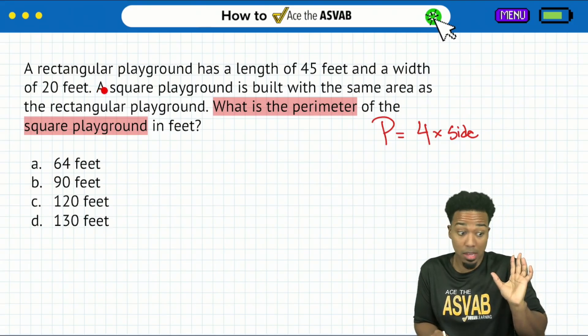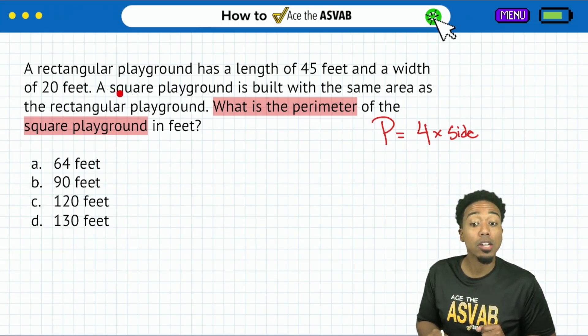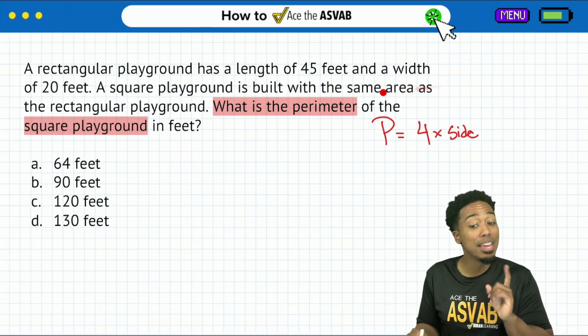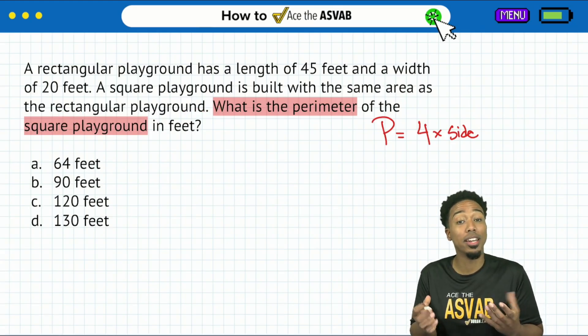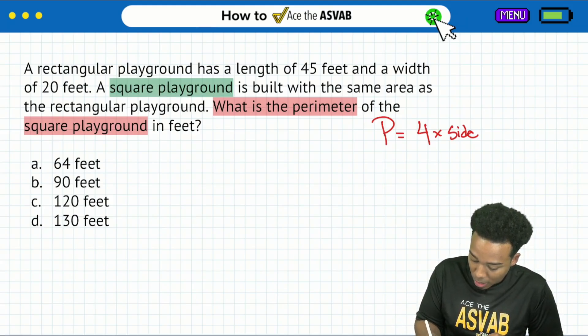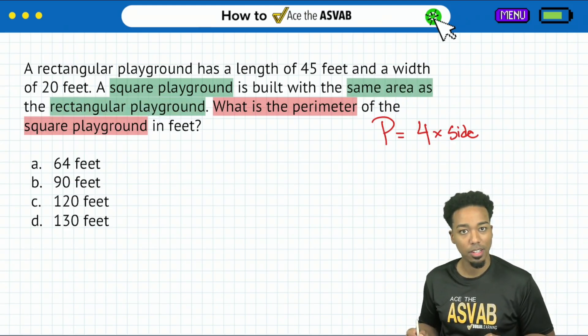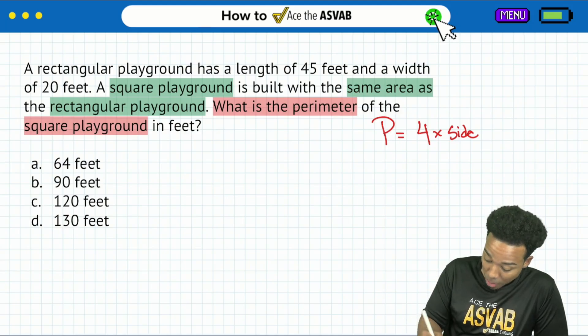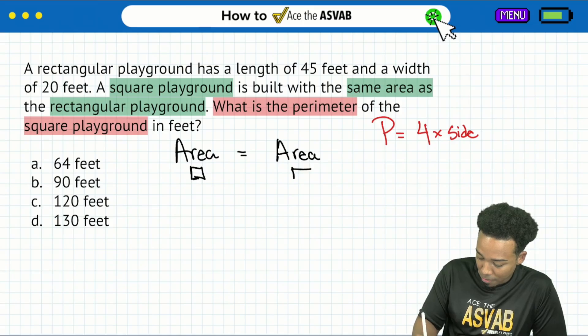There it is. B is the answer for this first one. Now let's take it on over to that second one. So here's the second one here. A rectangular playground has a length... Don't read the entire question. Go straight to the question sentence. What is the perimeter of the square playground in feet? So right here, perimeter of the square playground. Just like the previous question, we're looking for the perimeter of a square.